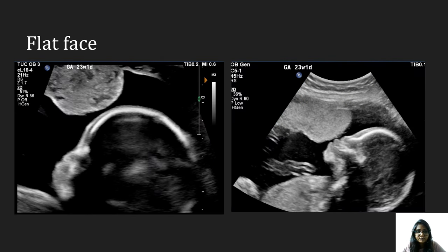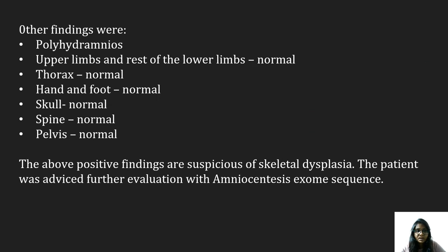Here we can see the flat face. Other findings were polyhydramnios; the upper limb, lower limb, and rest of the lower limbs were normal. Thorax, pelvis, spine, hand, foot, and skull were all normal. The above positive findings were suspicious of skeletal dysplasia, and the patient was advised for further evaluation with amniocentesis exome sequencing.